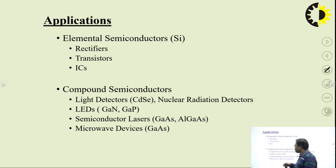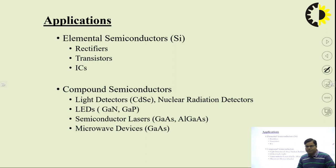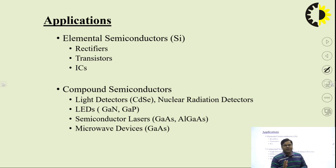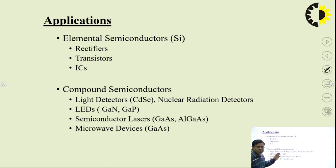Compound semiconductors are direct band gap semiconductors and have their own properties. In these semiconductors we get light output, so they can be used in optoelectronic devices. Optoelectronic devices convert optical energy into electrical energy or electrical energy into optical energy. For example, in an LED — light emitting diode — the input is electrical energy and the output is optical energy. These semiconductors are also used in microwave devices, semiconductor lasers, and light detectors.